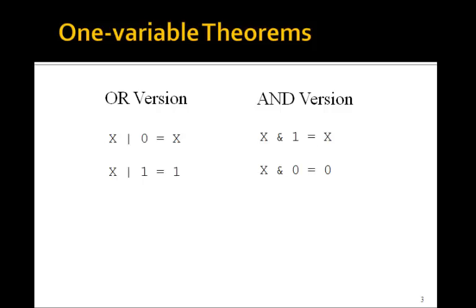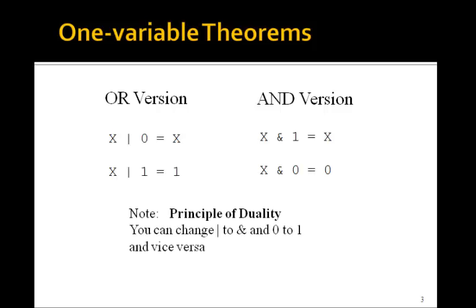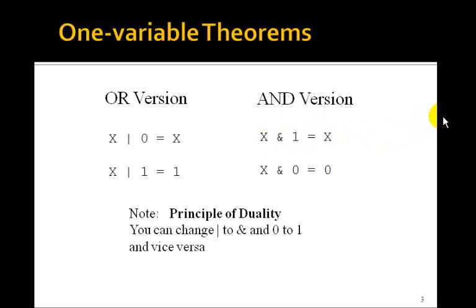It turns out that there's a principle of duality. We can always change ORs to ANDs and 0s to 1s. So here's an AND version — if we change OR to AND and 0 to 1, this must be true. x AND 1 is equal to x: if x is 0, this side is 0; if x is 1, this side is 1. And x AND 0 is 0 — if you AND anything with 0, you always get 0.